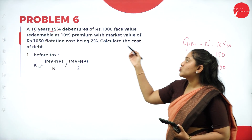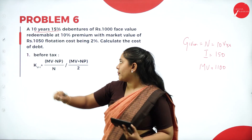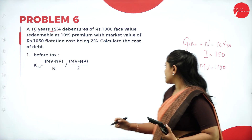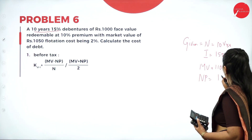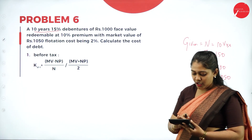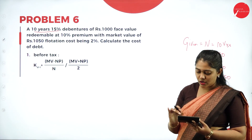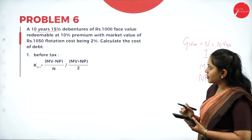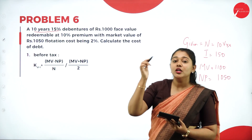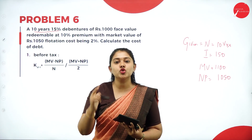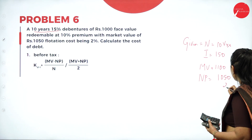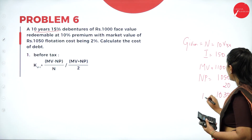The market value is given as rupees 1050, so the net proceeds (NP) will be the market price, which is 1050 rupees. While issuing, a flotation cost of 2% is incurred. Flotation cost is calculated on the issuing value of 1000 rupees: 1000 × 2% = 20 rupees. So net proceeds = 1050 − 20 = 1030 rupees.